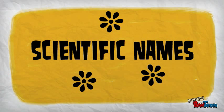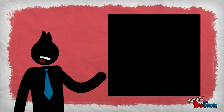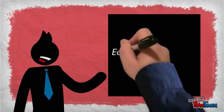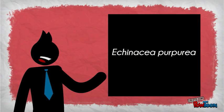The standard scientific name has two words. In the case of Echinacea purpurea, Echinacea is the genus, purpurea is the epithet.